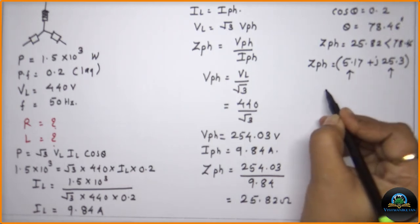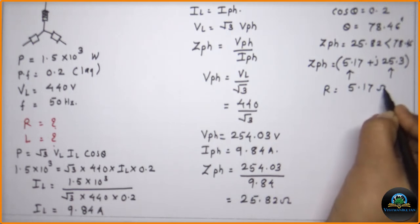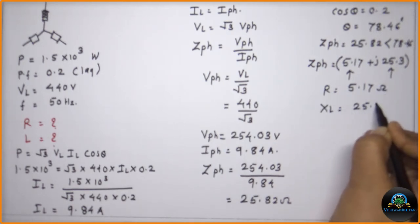So the calculated value, R is equal to 5.17 ohms and XL is equal to 25.3 ohms.